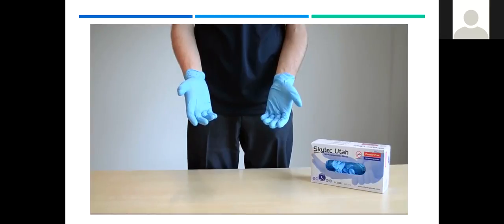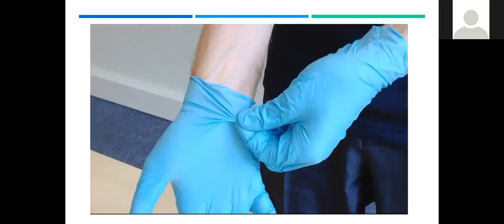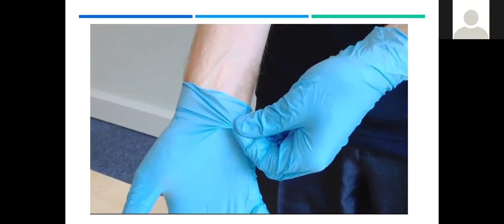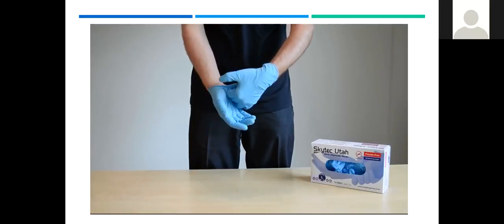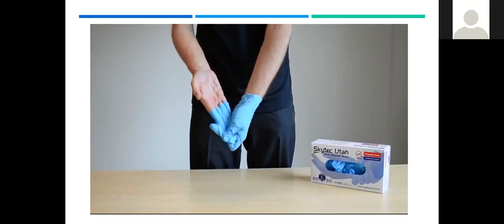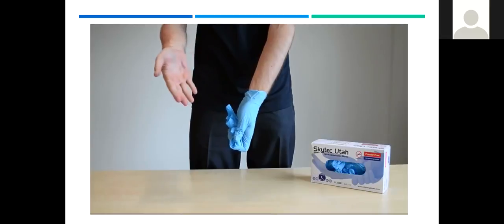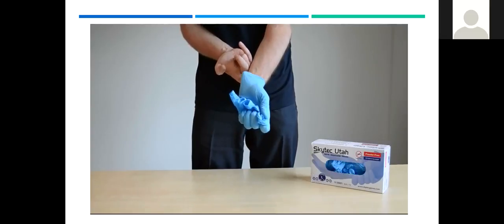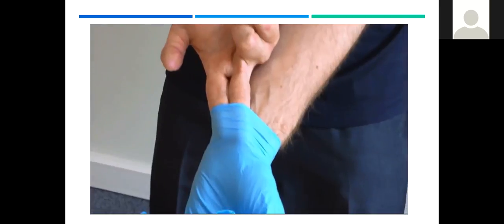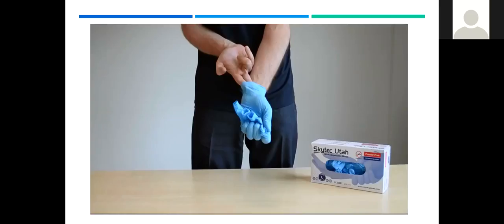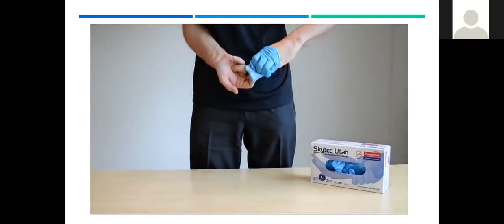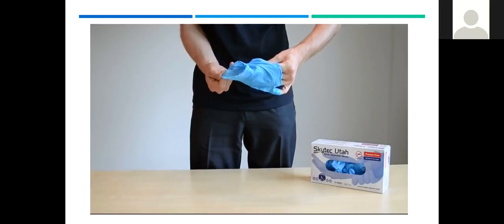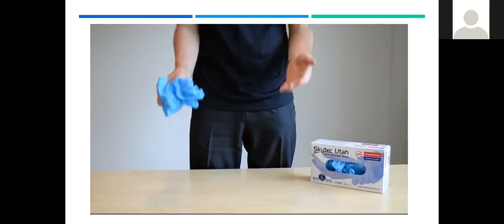When removing, first grasp the outer edge near the wrist area. Fold it over and peel it away from the hand, turning it inside out as it goes. This will trap potential contaminants inside the used glove. Once the glove is off, hold it with the gloved hand. To remove the other glove, place the bare fingers inside the cuff without touching the glove's exterior. Now peel it off from the inside, turning it inside out as it goes, and using it to envelop the other glove. Finally, discard them appropriately, and never wash or reuse disposable gloves.